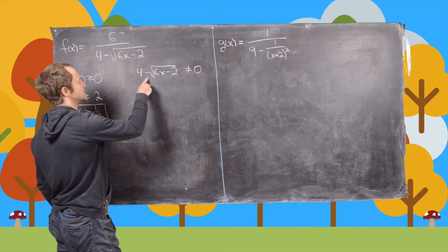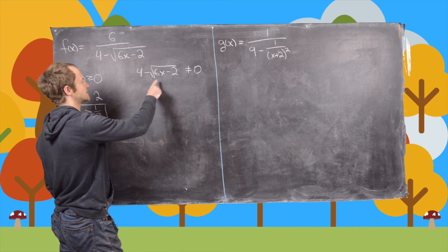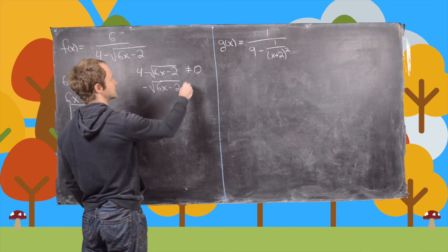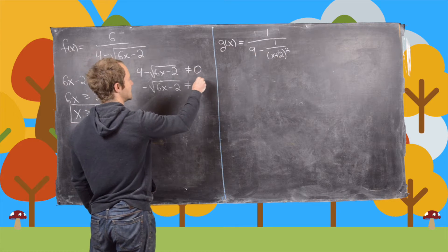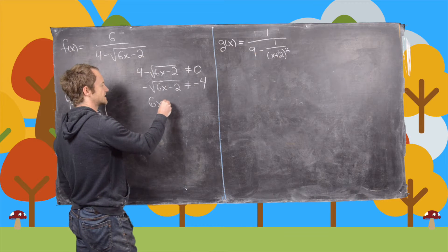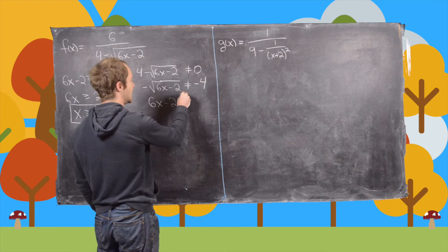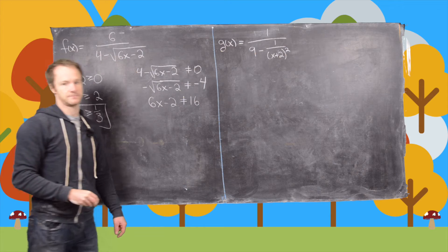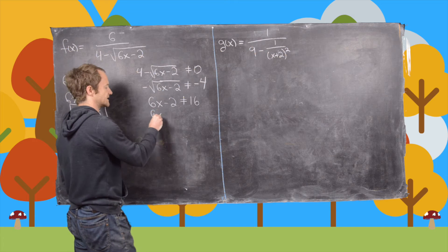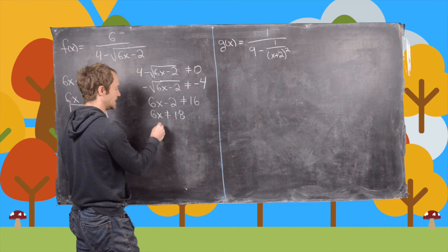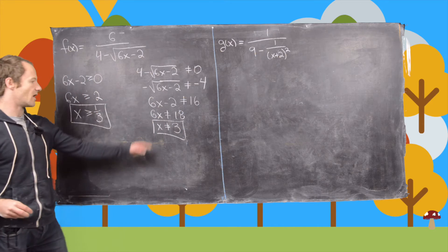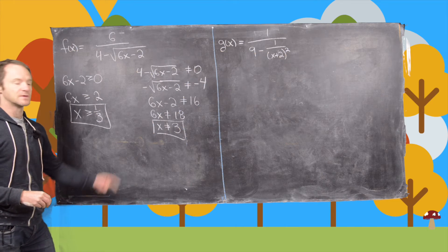Now let's look at the second condition. We'll subtract 4 from both sides, so that gives us negative square root of 6x minus 2 has to be not equal to negative 4. We can square both sides, and that gives us 6x minus 2 is not allowed to be 16. Adding 2 to both sides gives us 6x is not allowed to be 18, meaning x is not allowed to be 3.